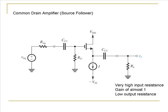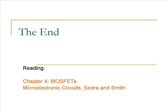The common drain amplifier gives the input to the gate and takes the output from the source. It has very high input resistance, a gain almost equal to but slightly less than 1, and very low output resistance. The common drain amplifier is also called a source follower and is very commonly used as a voltage buffer. I strongly encourage you to calculate the voltage gain and input and output resistances for each of these amplifier configurations, and we will also do a few problems in class.